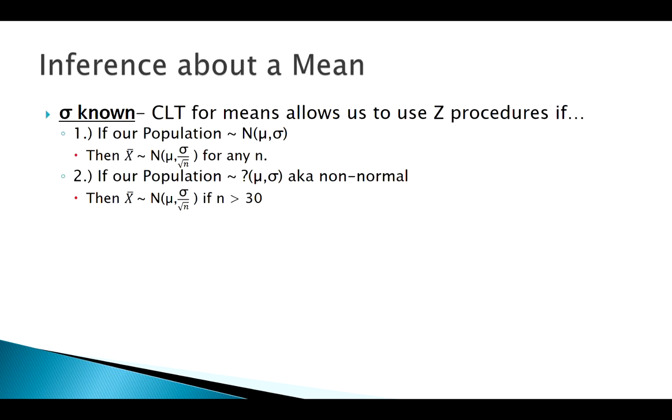All right, so let's sum up everything we know about a mean. When we're thinking through these inference ideas for the mean, we know when we know sigma. Here's where our central limit theorem comes in. If our population is normal, we're in good shape for any sample size. Our population is not normal or greater than 30.